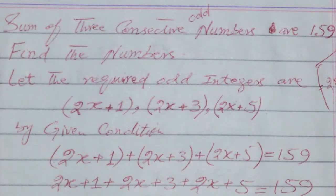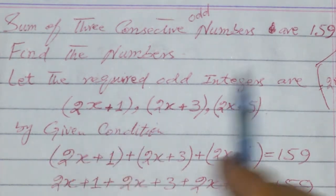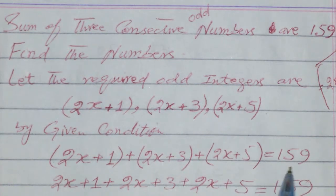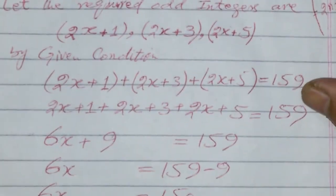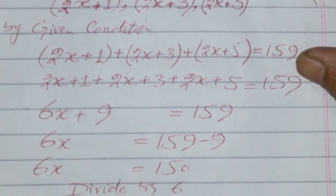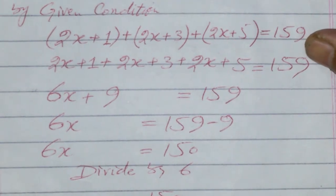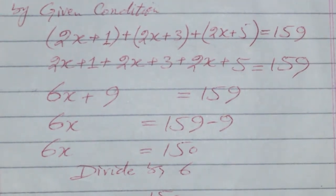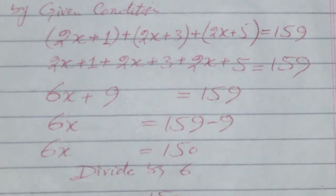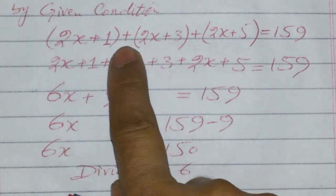The given condition is that the sum is 159. The question is very simple. By the condition, we can write the equation: 2x+1 plus 2x+3 plus 2x+5 equals 159.